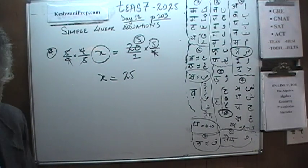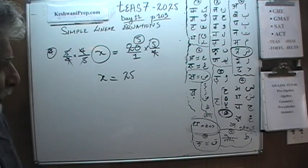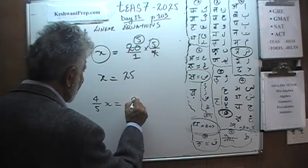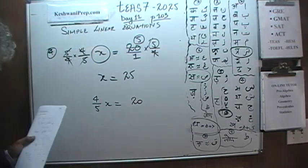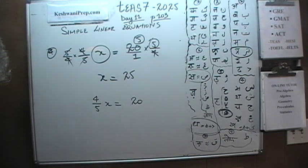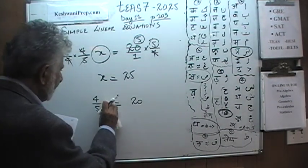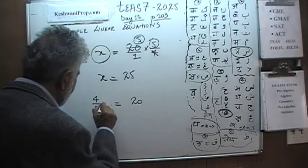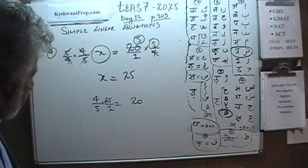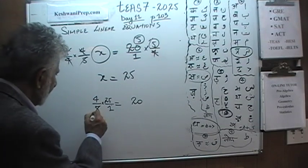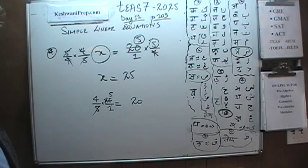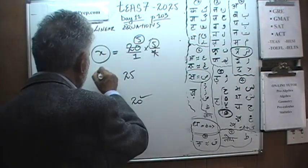If you wanted to, you can actually very quickly verify. We were told that 4 fifths x is equal to 20. Let's see what happens if you put in the value of x equals 25. Put a 1 here if it helps you. If you divide top and bottom by 5, this 5 goes away, and 25 divided by 5 is 5. As you can see clearly, 4 times 5 is 20. It checks out. x is equal to 25.